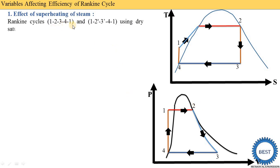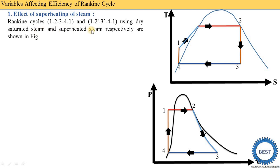In the PV diagram, at constant pressure, temperature is increased — this line moves further horizontally to give point two-dash in the superheated region. Then isentropic expansion in the turbine gives point three-dash, followed by heat rejection in the condenser. This is the new PV diagram: one, two-dash, three-dash, four, one for superheated steam. The enclosed area is increased compared to the dry and saturated steam cycle — this increased area represents the increase in net work done due to superheating.